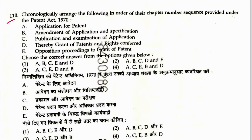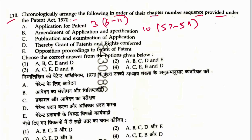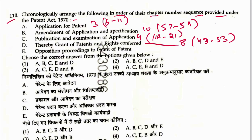Question 110: Chronologically arrange following chapters under the Patent Act. Application for patent — Chapter 3 (Sections 6–11). Publication and examination of application — Chapter 4 (Sections 11A–21). Opposition proceedings to grant of patent — Chapter 5 (Sections 25–28). Grant of patent and rights conferred — Chapter 8 (Sections 43–53). Amendment of application and specification — Chapter 10 (Sections 57–59). Sequence is A, C, E, B, D. Answer is 3.